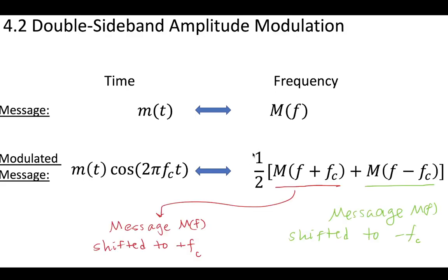The message, this first part of the message in red is shifted to plus fc, and the second part of the message in green is shifted to minus fc. This is the effect of modulating the message, and you can see this by applying the Fourier transform tables or the Fourier transform properties.